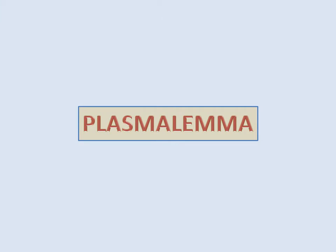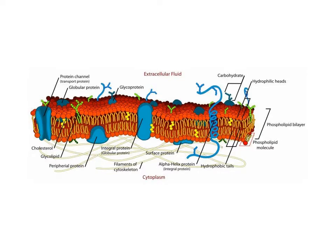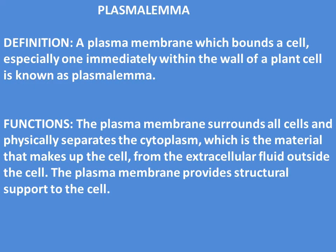Now we will learn about plasmalemma. This is a diagram of plasmalemma. Definition: a plasma membrane which bounds a cell spatially, one immediately within the wall of a plant cell, is known as plasmalemma. Functions: the plasma membrane surrounds all cells and physically separates the cytoplasm — the material that makes up the cell — from the extracellular fluid outside the cell. The plasma membrane also provides structural support to the cell.